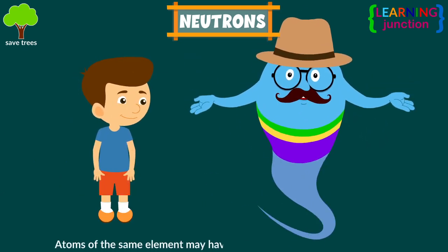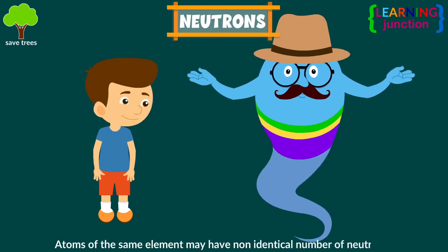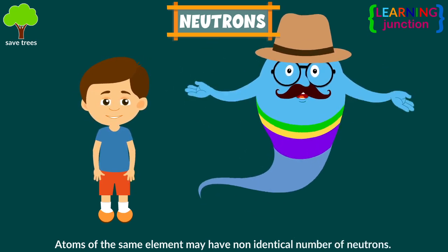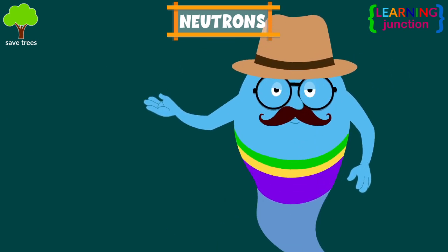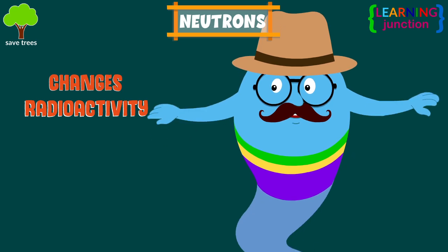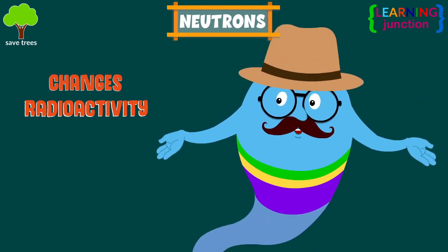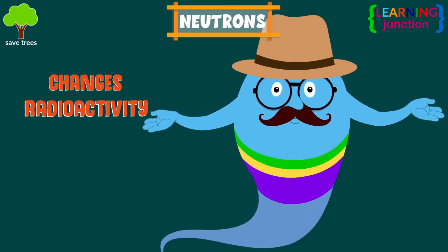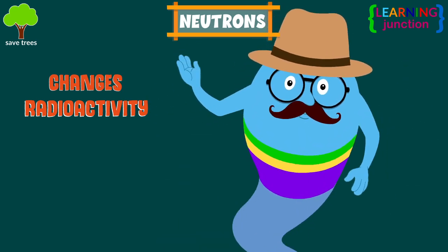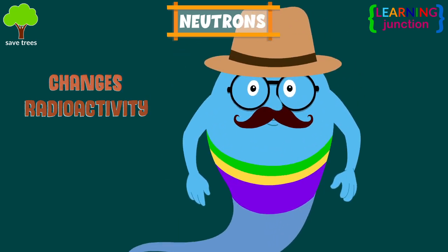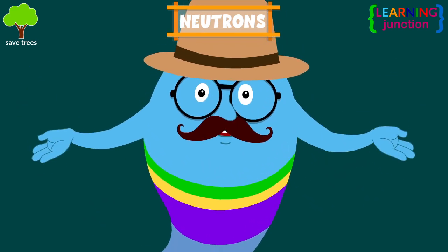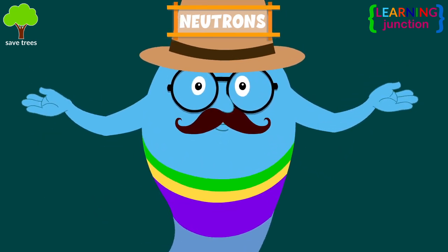Atoms of the same element may have a non-identical number of neutrons. Adding neutrons changes the radioactivity of the particular element without changing the charge of the atom. This is very important in nuclear physics.